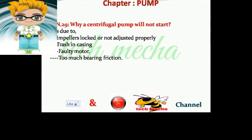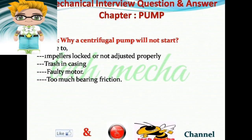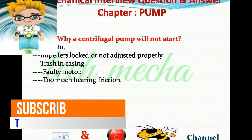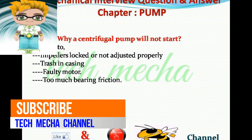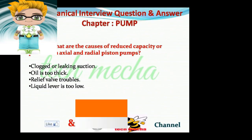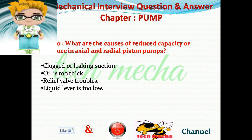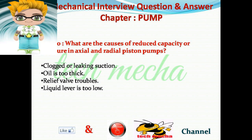Question number 29: Why will a centrifugal pump not start? Answer: It is due to impellers locked or not adjusted properly, trash in the casing, faulty motor, or too much bearing friction. Question number 30: What are the causes of reduced capacity or pressure in axial and radial piston pumps? Answer: The main causes of reduced capacity are clogged or leaking suction, oil too thick, relief valve troubles, and liquid level too low.